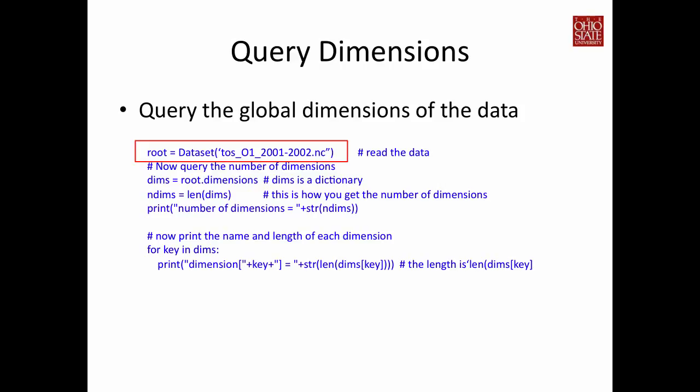Now let's see how you can read information from a NetCDF file using Python. Assuming you have a file — which is a data name — to open the file you just call dataset and return the result to a variable named root. Remember, using Python you don't have to declare the variable; it's dynamically typed, so you can just assign the result to a variable that you choose. Here I use root.